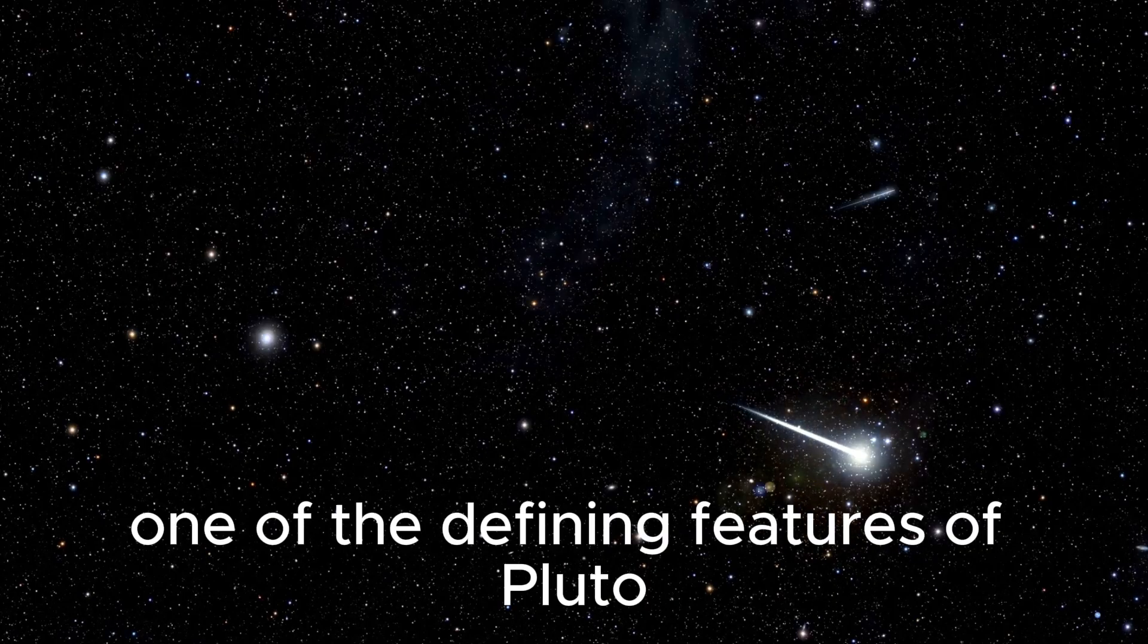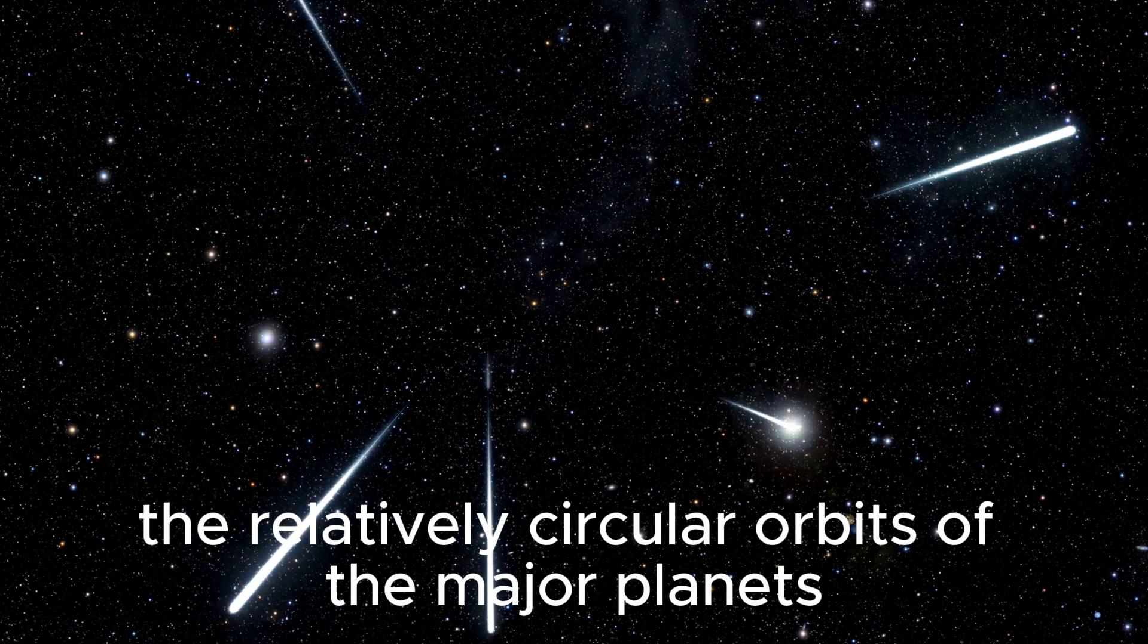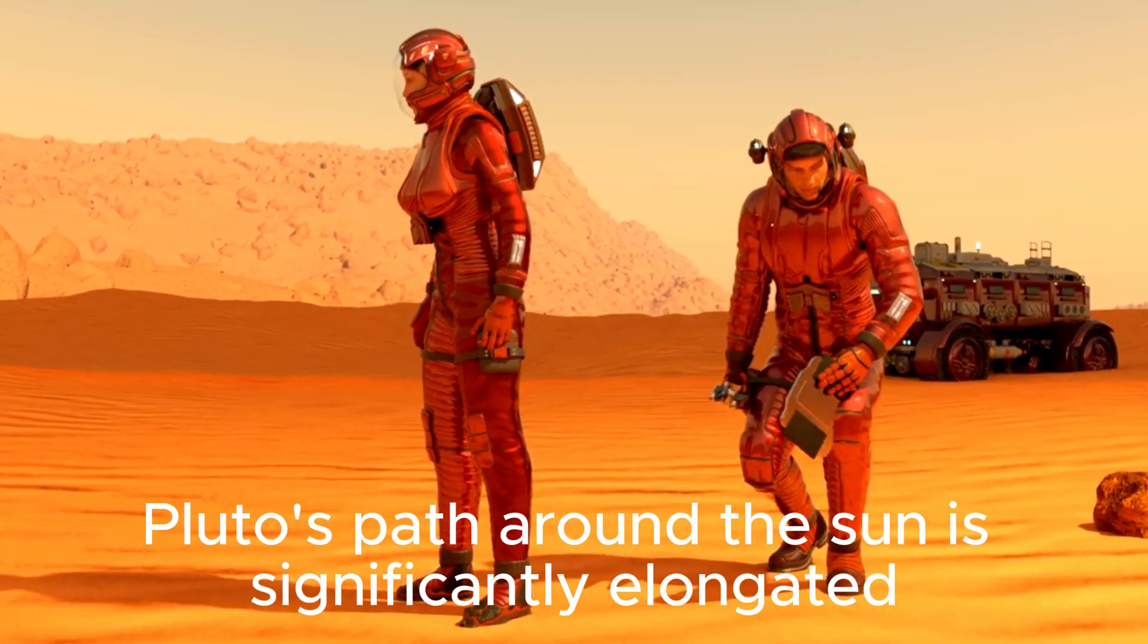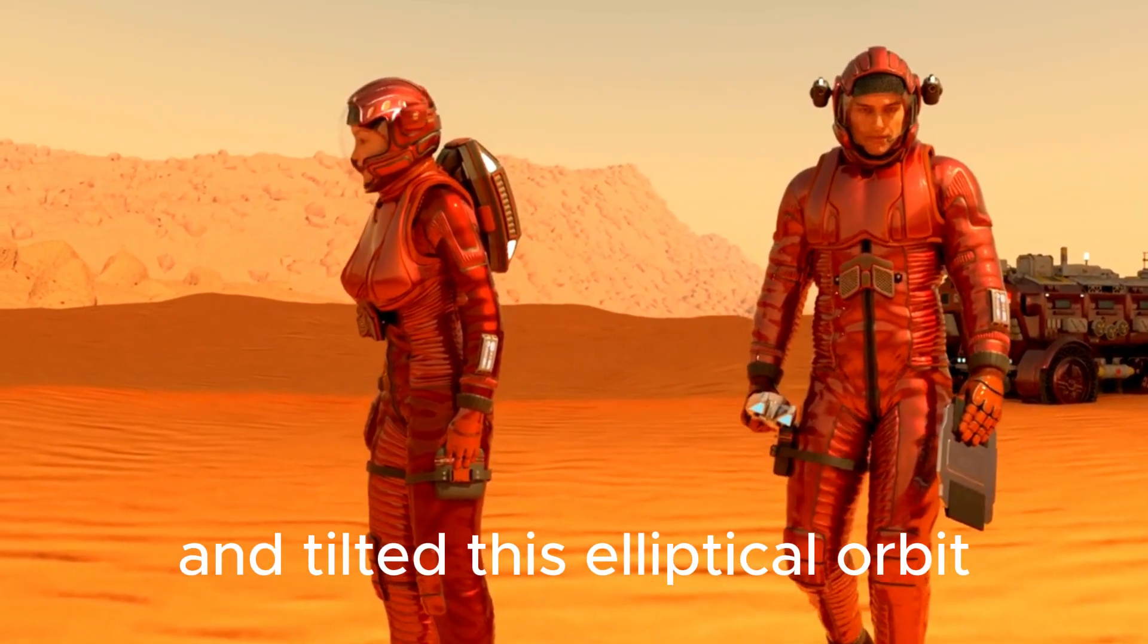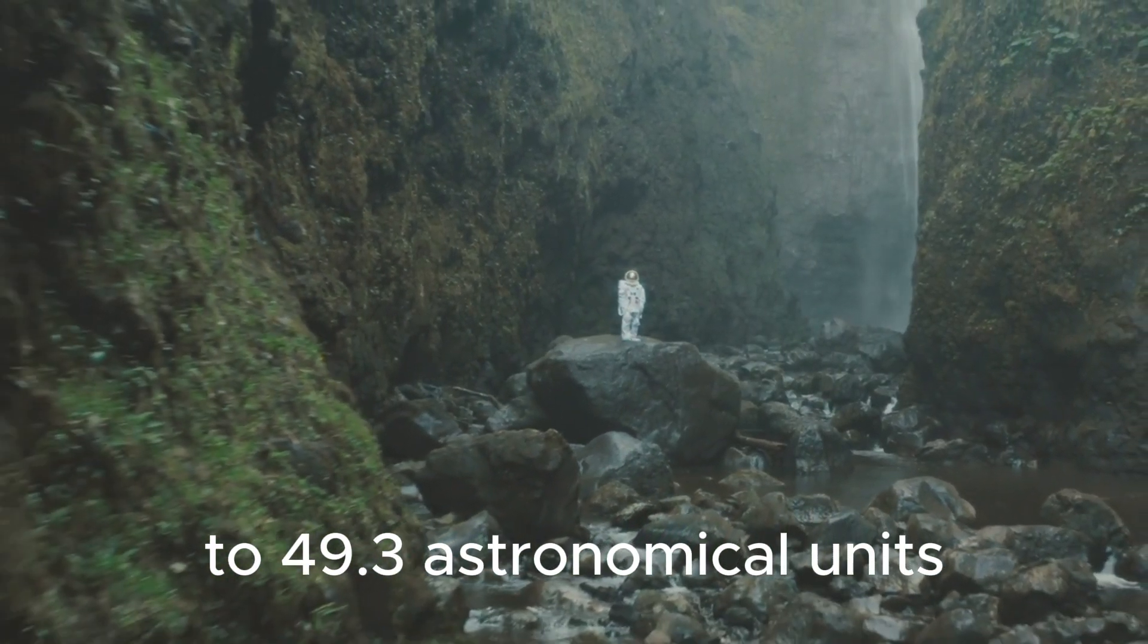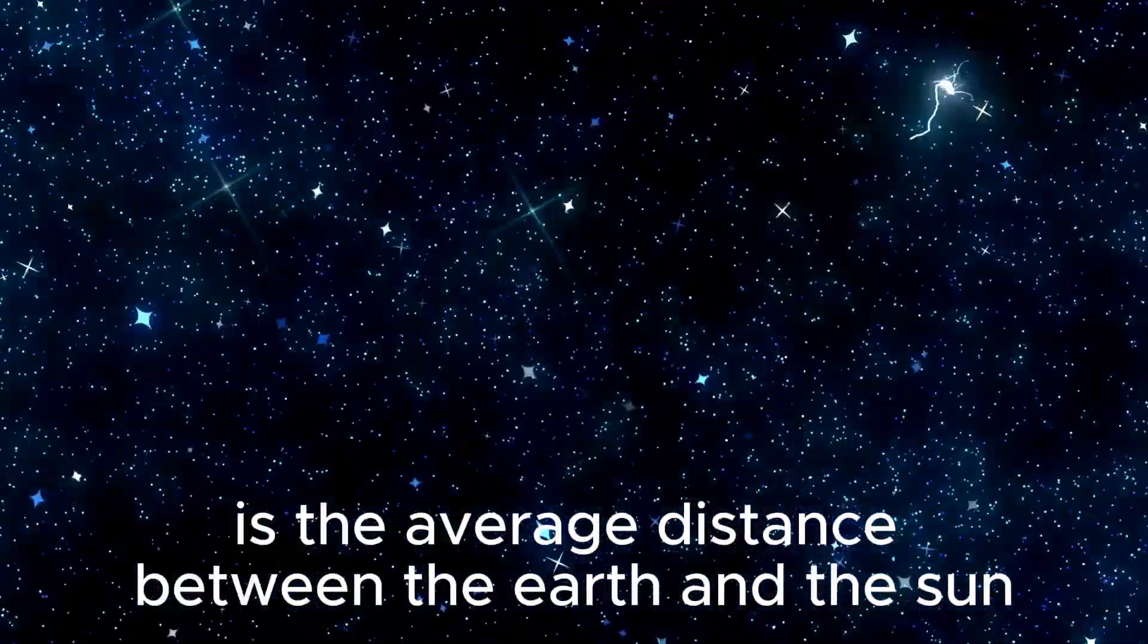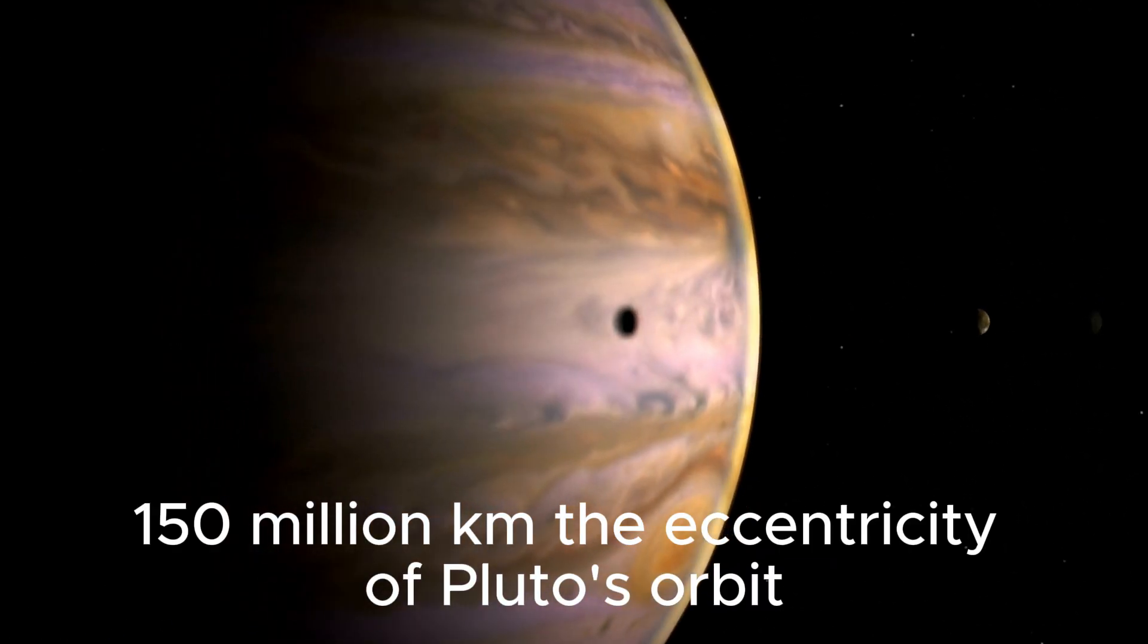One of the defining features of Pluto is its highly eccentric orbit. Unlike the relatively circular orbits of the major planets in our solar system, Pluto's path around the Sun is significantly elongated and tilted. This elliptical orbit takes Pluto from approximately 29.7 to 49.3 astronomical units (AU) from the Sun. An astronomical unit is the average distance between the Earth and the Sun, approximately 93 million miles or 150 million kilometers.